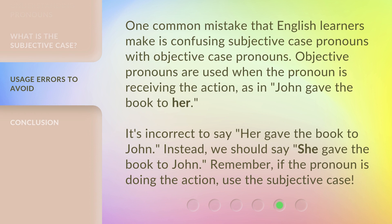One common mistake that English learners make is confusing subjective case pronouns with objective case pronouns. Objective pronouns are used when the pronoun is receiving the action — as in, 'John gave the book to her.' It's incorrect to say, 'Her gave the book to John.' Instead, we should say, 'She gave the book to John.' Remember, if the pronoun is doing the action, use the subjective case.